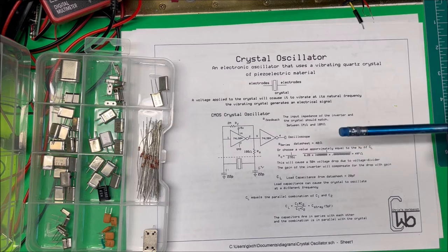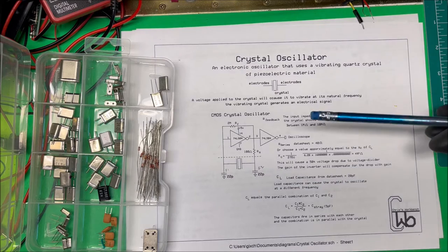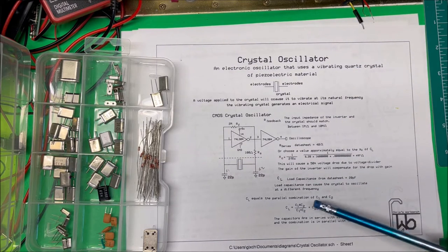What's happening here is that the capacitors are in series with each other, and the combination is in parallel with the crystal. So that's how they come up with this formula.